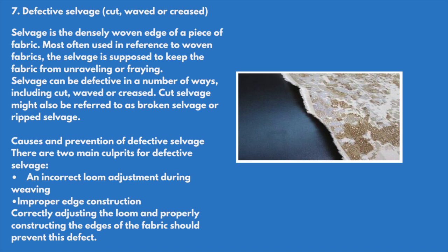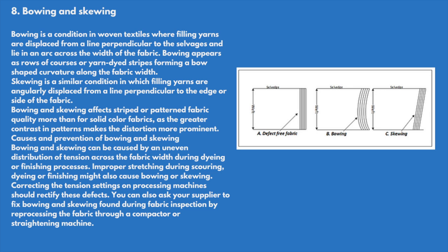Bowing and skewing: bowing is a condition in woven textiles where filling yarns are displaced from a line perpendicular to the selvages and curve in an arc across the width of the fabric. Bowing appears as rows or courses of yarn, dye strips forming a bow-shape curvature along the fabric. Skewing is a similar condition in which filling yarns are angularly displaced from a line perpendicular to the edge or side of the fabric.